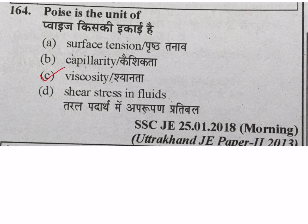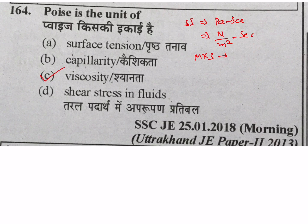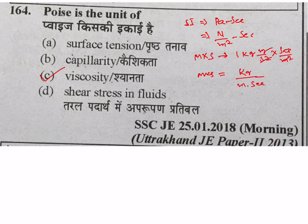Next question: poise is the unit of what? Poise is the unit of coefficient of dynamic viscosity. The SI unit for coefficient of dynamic viscosity is Pascal-second or newton per meter square into second. The MKS unit is kg per meter per second.